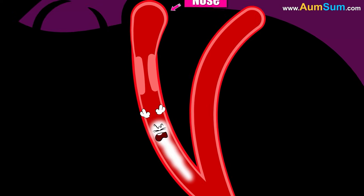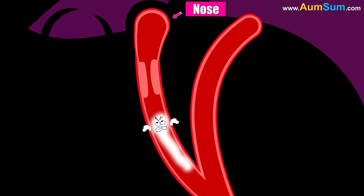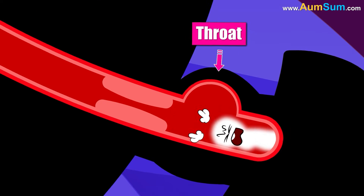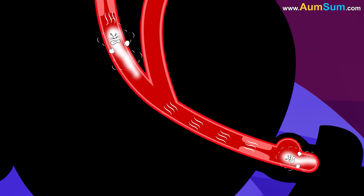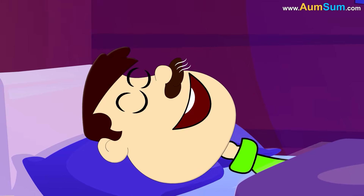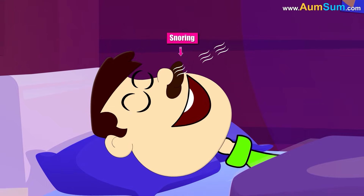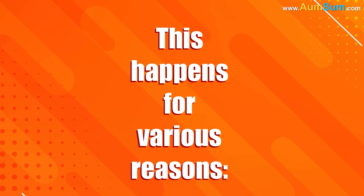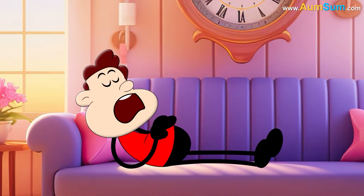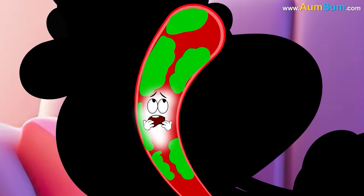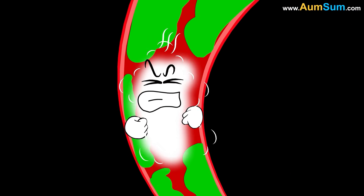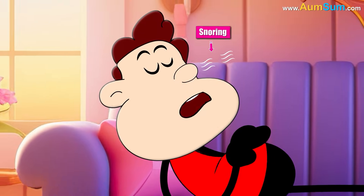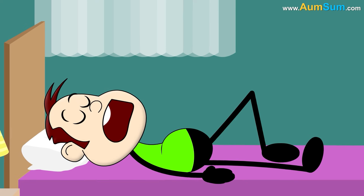Why do we snore? Snoring occurs when air struggles to move freely through our nose and throat during sleep, causing the surrounding tissues to vibrate. This happens for various reasons. Firstly, nasal congestion from allergies or colds can block the airway. Secondly, when we sleep on our back, our tongue may block the airway.